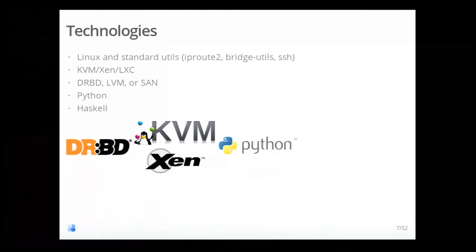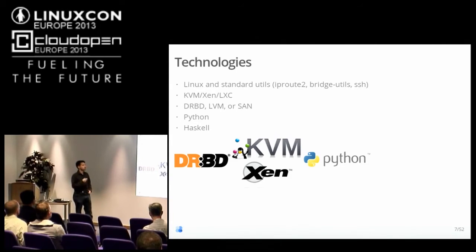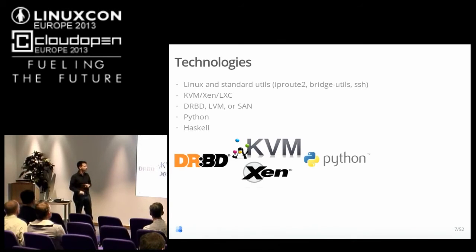Ganeti is open and built on top of open source technologies: Linux and all the standard utils. As I said, KVM, Xen, or LXC as the hypervisors. DRBD, LVM, or in general any kind of storage area network is perfectly fine. It's implemented in Python and Haskell.